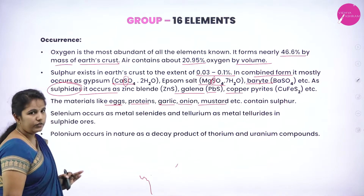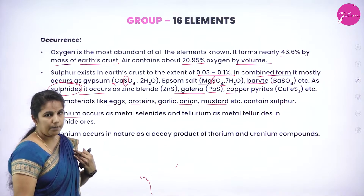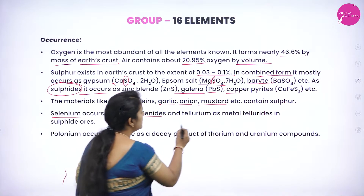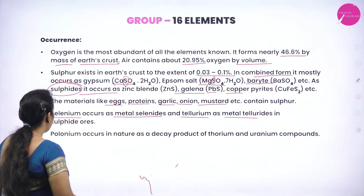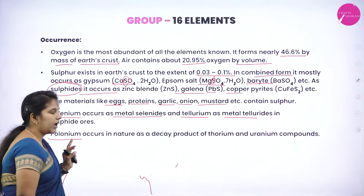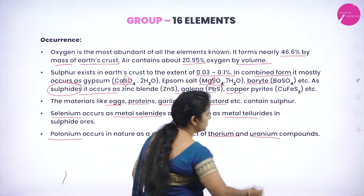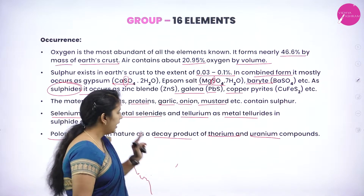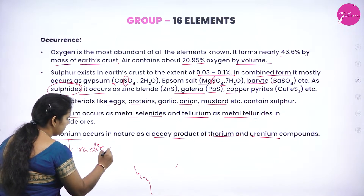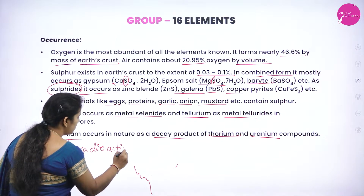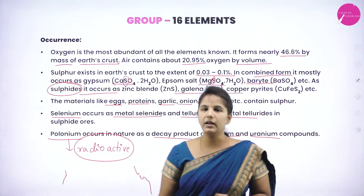Selenium occurs as metal selenites, and Tellurium occurs as metal tellurites. Polonium occurs as a decay product of thorium and uranium, and is therefore known as a radioactive element.